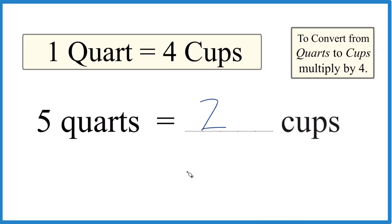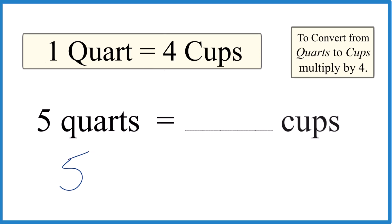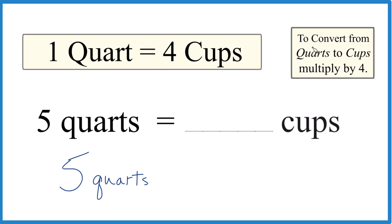There's another way we could do this though. We could say you have your five quarts here and we're going to multiply those five quarts by four because when we go from quarts to cups, we just multiply by four.